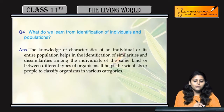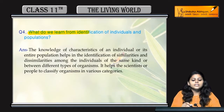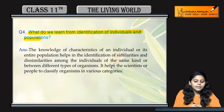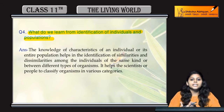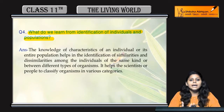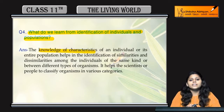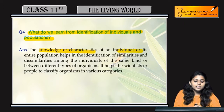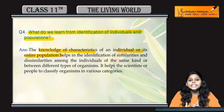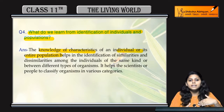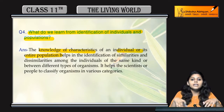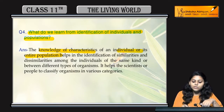Next question is: what do we learn from identification of individuals and population? हम किसी भी individual या population की identification से क्या पता लगता है? Knowledge of characteristics of an individual और its entire population की वजह से हमें पता लगता है कि वो कितना similar है या कितना dissimilar है।